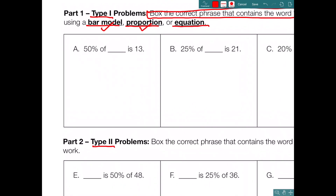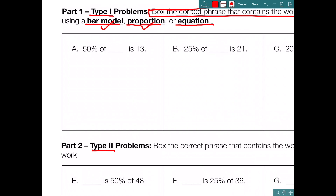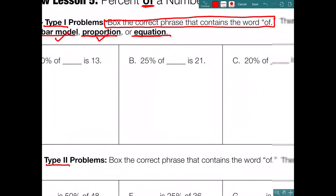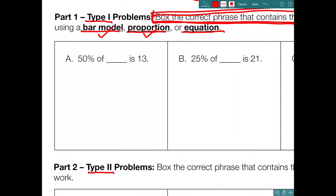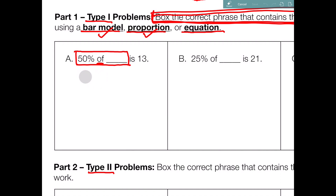Let's look at box A. It says: '50% of blank is 13.' Box the correct phrase that contains the word 'of' — so we box '50% of blank,' and notice that 'of' is in the middle. In math, 'of' means multiply, but here's a problem: I don't know what to multiply. One number is 50% and the other is blank. So I cannot solve this with straight multiplication — I have to solve it a different way.